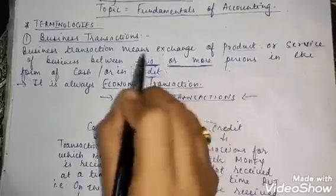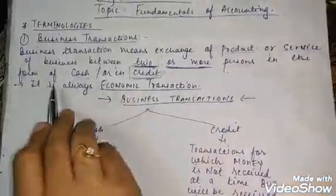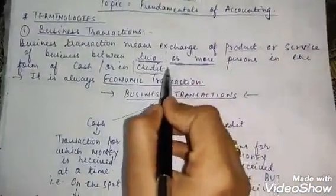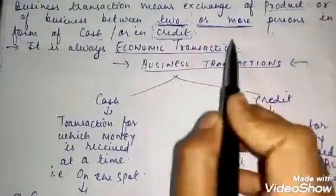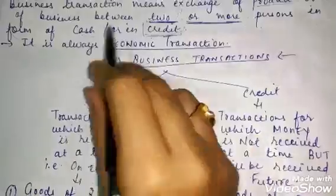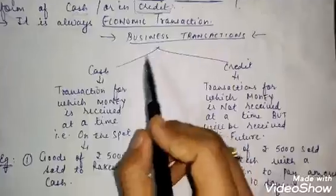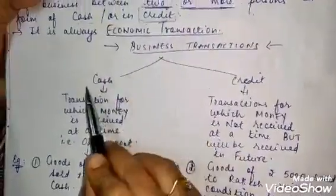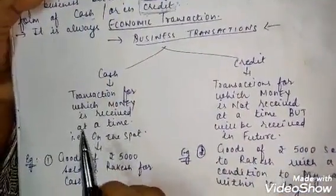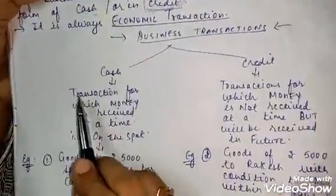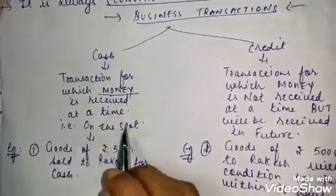A business transaction is always an economic transaction. There are two types of business transactions: cash transactions and credit transactions. A cash transaction is one for which money is received at the time of the transaction — on the spot.